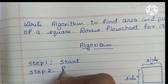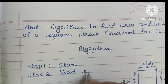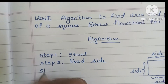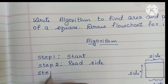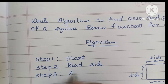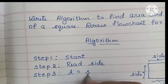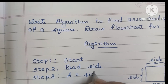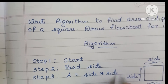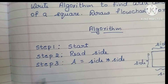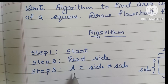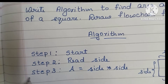In step three we have to find the area of a square. The formula is side into side — that is side squared. Area of a square is equal to A = side × side.